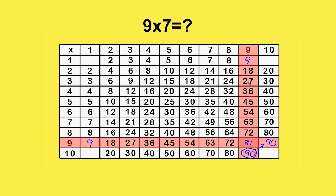Let's say you wanted to look up what 9 times 7 is. You go down the 9th column until you reach the 7th row and read off the answer: 63.